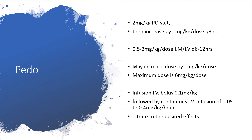In pediatrics, you can give as high as 1 to 2 mg/kg per dose orally stat, and increase by 1 mg/kg per dose every 8 hours to get the desired effect, keeping an eye on potassium levels. You can give 0.5 to 2 mg/kg per dose IM or IV every 6 to 12 hours, increasing the dose by 1 mg/kg per dose. The maximum dose allowed is 6 mg/kg per dose. For infusion, you can give an IV bolus of 0.1 mg/kg followed by continuous IV infusion of 0.05 to 0.4 mg/kg per hour, then titrate to the desired effect.